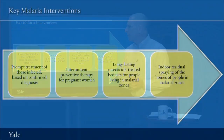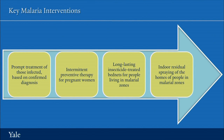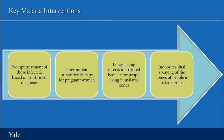The first is prompt treatment of those infected based on confirmed diagnosis. It's important that people not be treated presumptively because they might not have malaria and then you could breed resistance. It's also important that pregnant women receive intermittent preventive therapy, given the important relationship between pregnancy and malaria and the deleterious impact of malaria on women and their children. Long-lasting insecticide-treated bed nets for people living in malaria zones are very important, and we want everyone in those areas sleeping under a bed net. Each of these elements is critical in reducing the burden of malaria. Indoor residual spraying of the houses of people in malarial zones is also important.